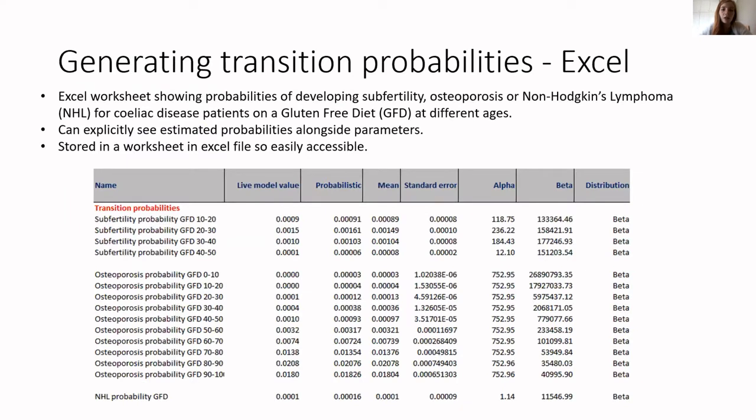And then I thought about generating transition probabilities. This is what my Excel worksheet would look like, showing the probabilities of developing subfertility, osteoporosis, or non-Hodgkin's lymphoma for celiac disease patients on a gluten-free diet and in different age groups. Again, you can explicitly see the estimated probabilities alongside the parameters, which is an advantage. And also, the data can be stored in a worksheet in the Excel file, so it's easily accessible. And you can see how everything links together.